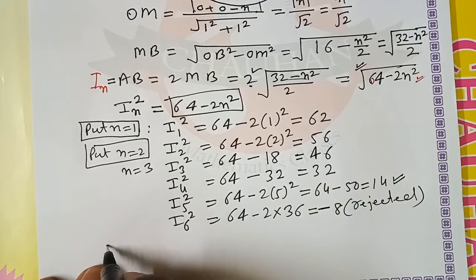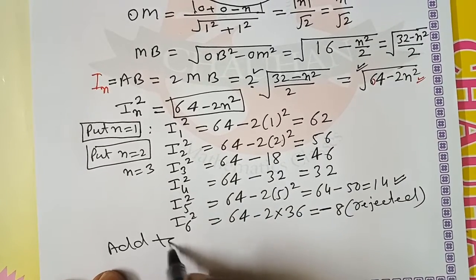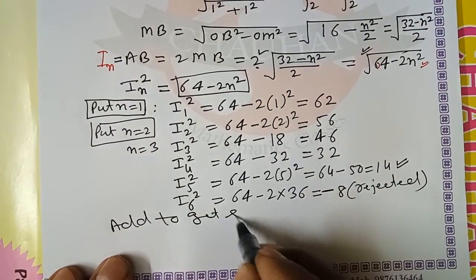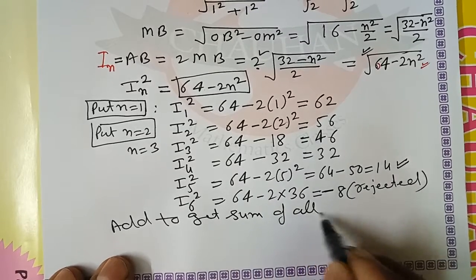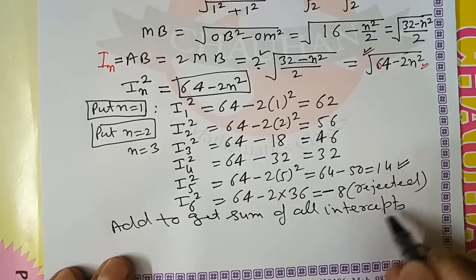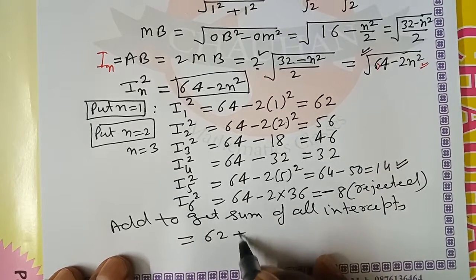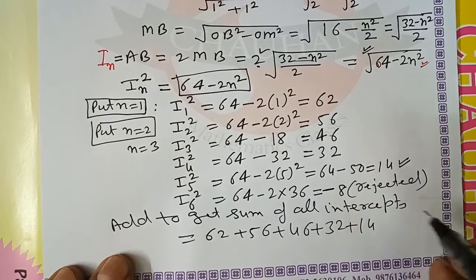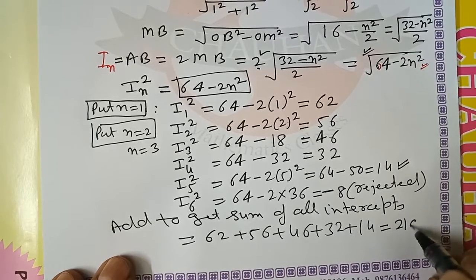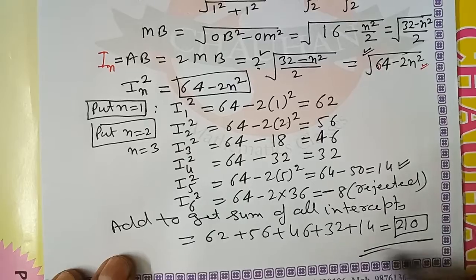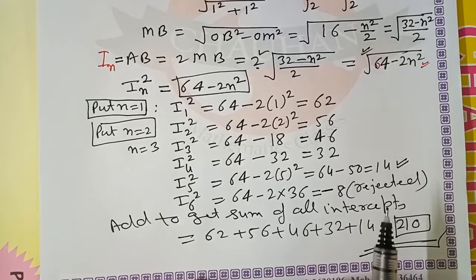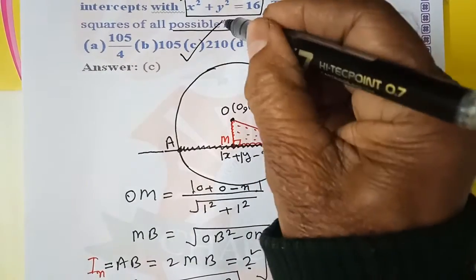Now add to get sum of all the intercepts. That is 62 plus 56 plus 46 plus 32 plus 14. When you calculate this, you get 210. This is the answer, and 210 can be seen as option C. You can see in the question, this is the answer.